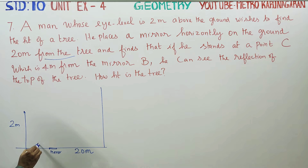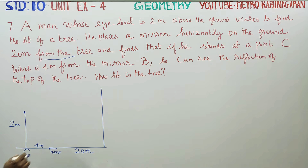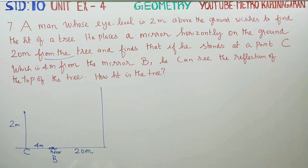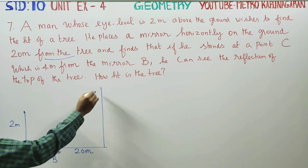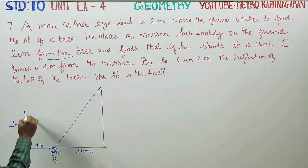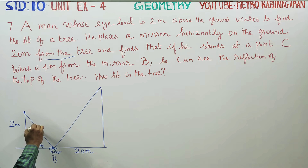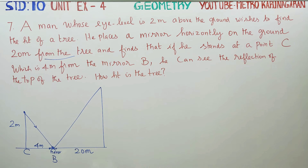Point C is 4 meters from the mirror at point B. From there, he can see the reflection of the top of the tree. EC is the eye level. How high is the tree?